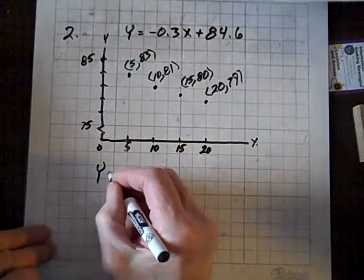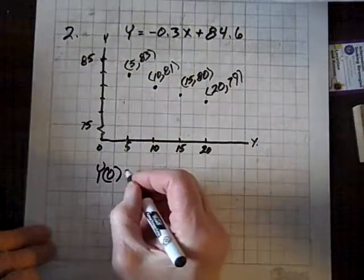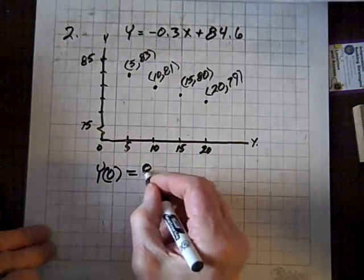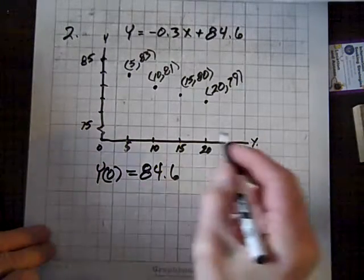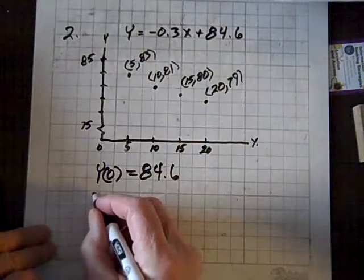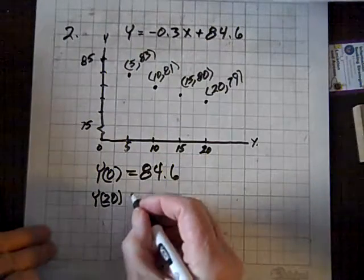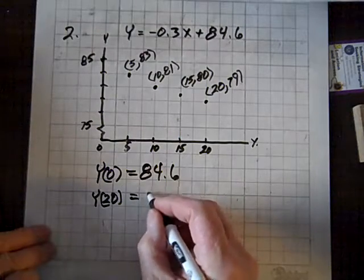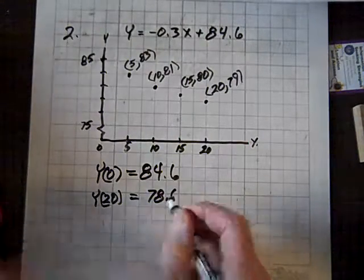At time zero, the Y-intercept is, X will be zero, and we get 84.6. And then at 20 years, Y of 20, replacing X here with 20 and computing, I get 78.6.